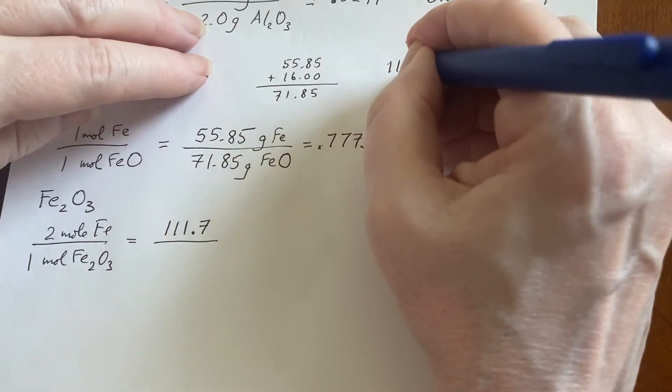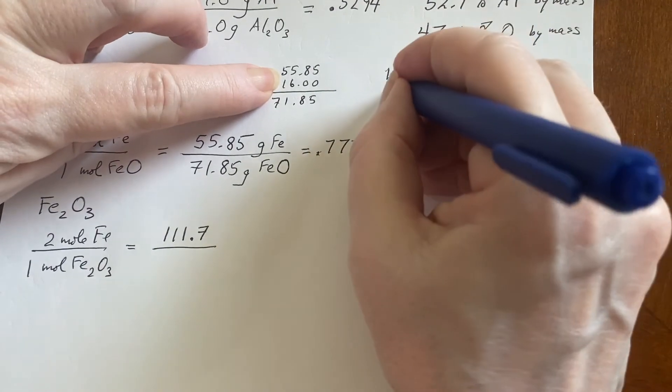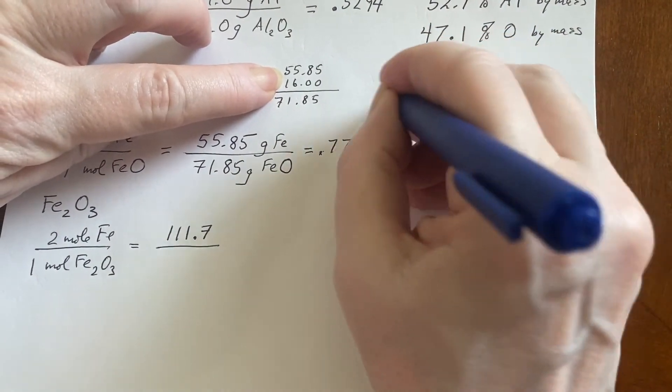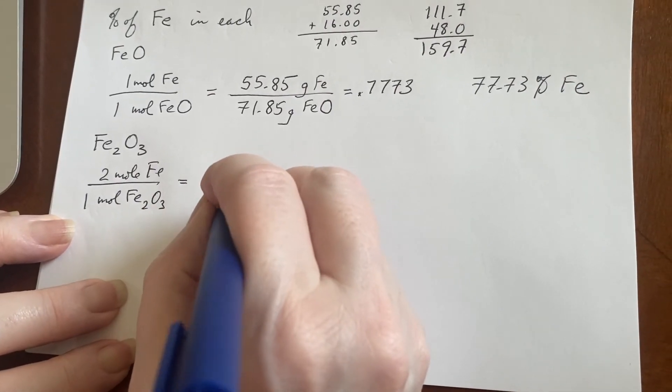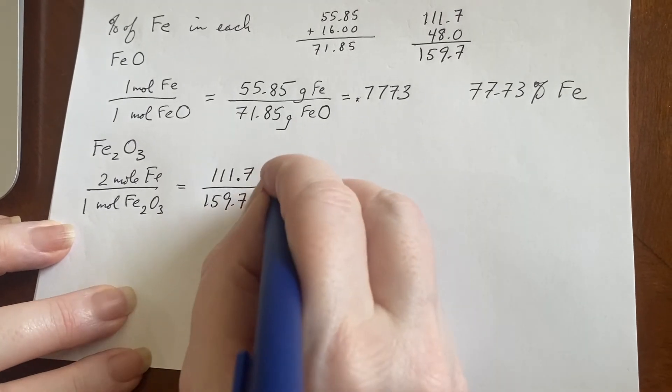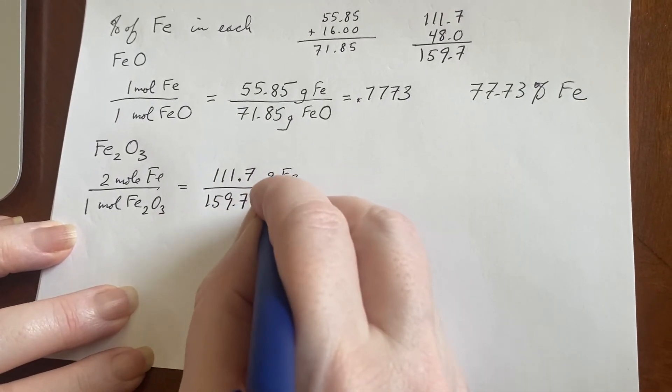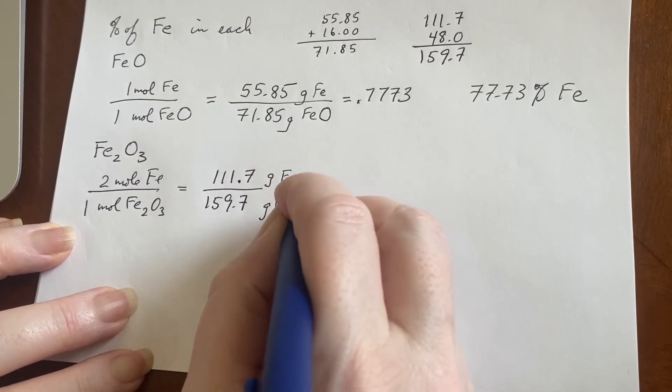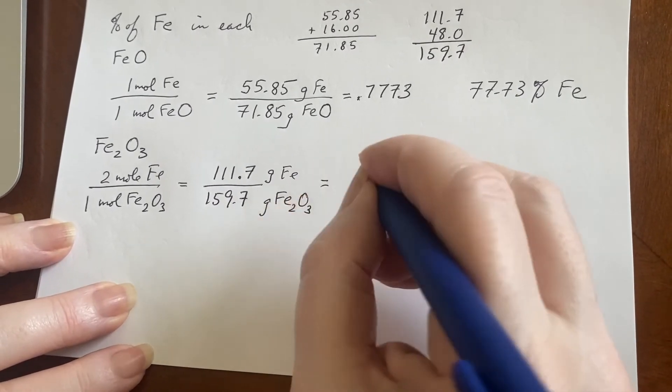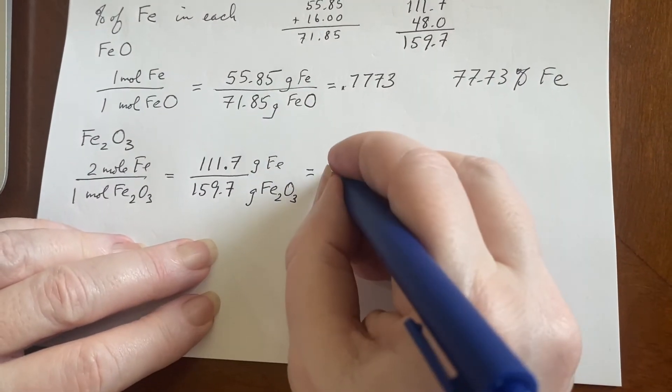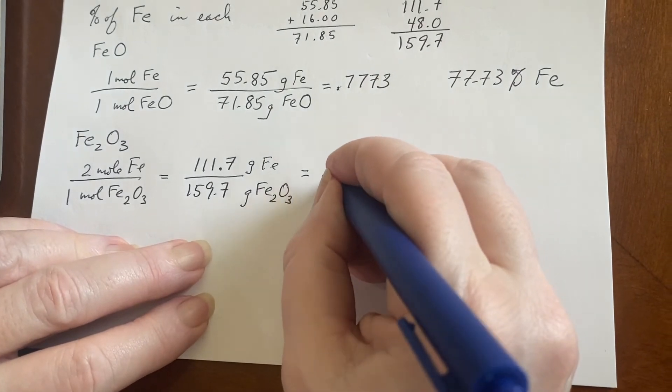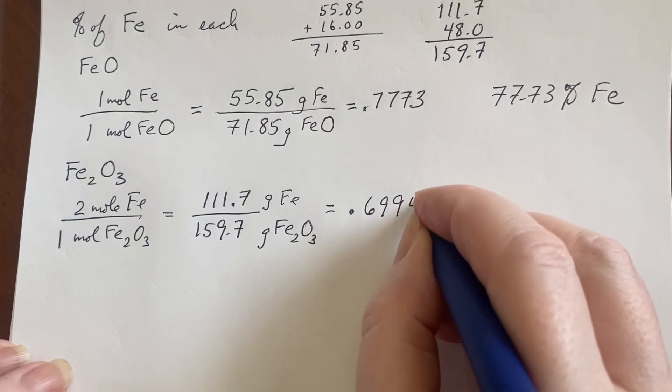And then when I add the three oxygens to it, 111.7, three of these 48.0, 159.7 grams of iron up here and grams of my sample hematite. So I hit the calculator, I get .6994.